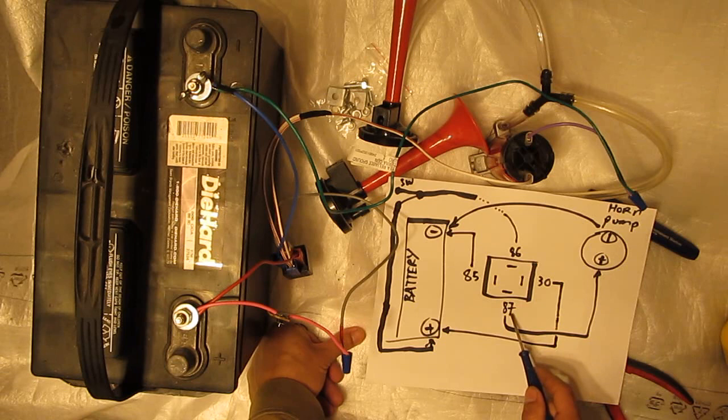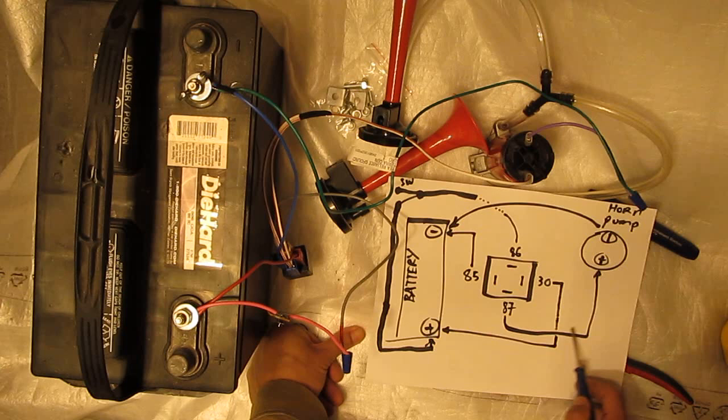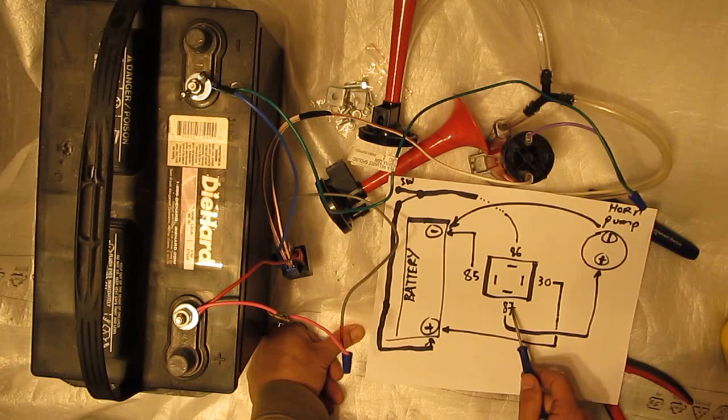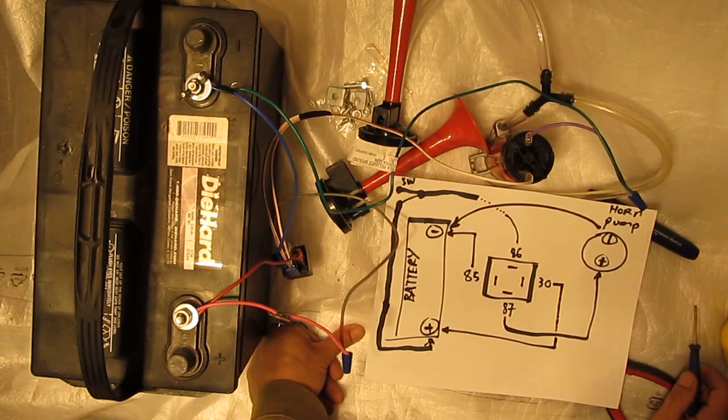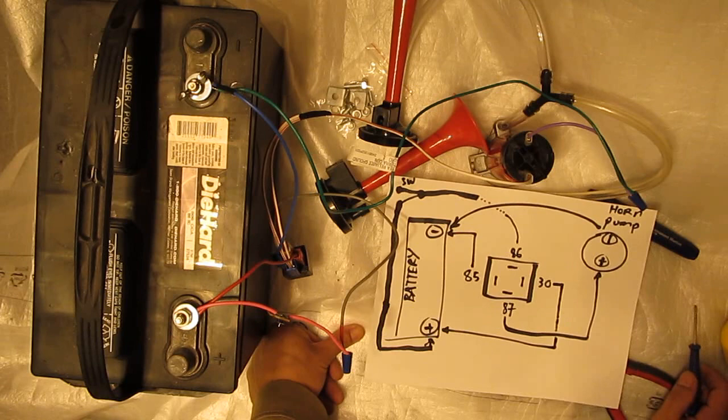Pin 87, which is positive, that goes to the device. In this case, the pump. So 87 goes out to positive of the pump. And that's pretty much it. You can get close, you can see it better, the diagram.